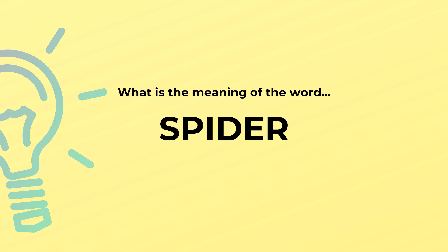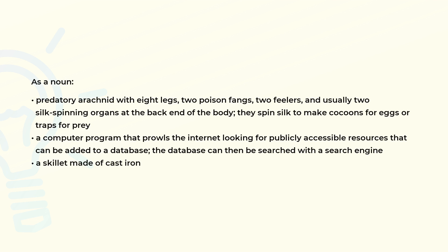What is the meaning of the word spider? As a noun: a predatory arachnid with eight legs, two poison fangs, two feelers, and usually two silk-spinning organs at the back end of the body.